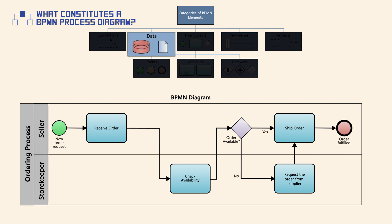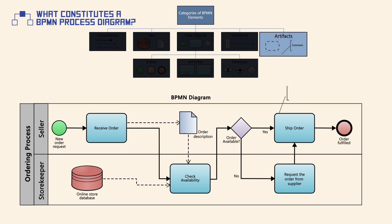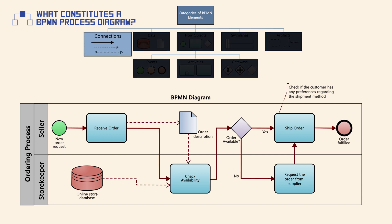Data elements provide information about what activities require to be performed and what they produce. Artifacts, such as comments, are used to provide additional information about processes, but they don't affect the flow of a process. All of these BPMN categories of elements are linked with each other by using one of the proper connecting objects.